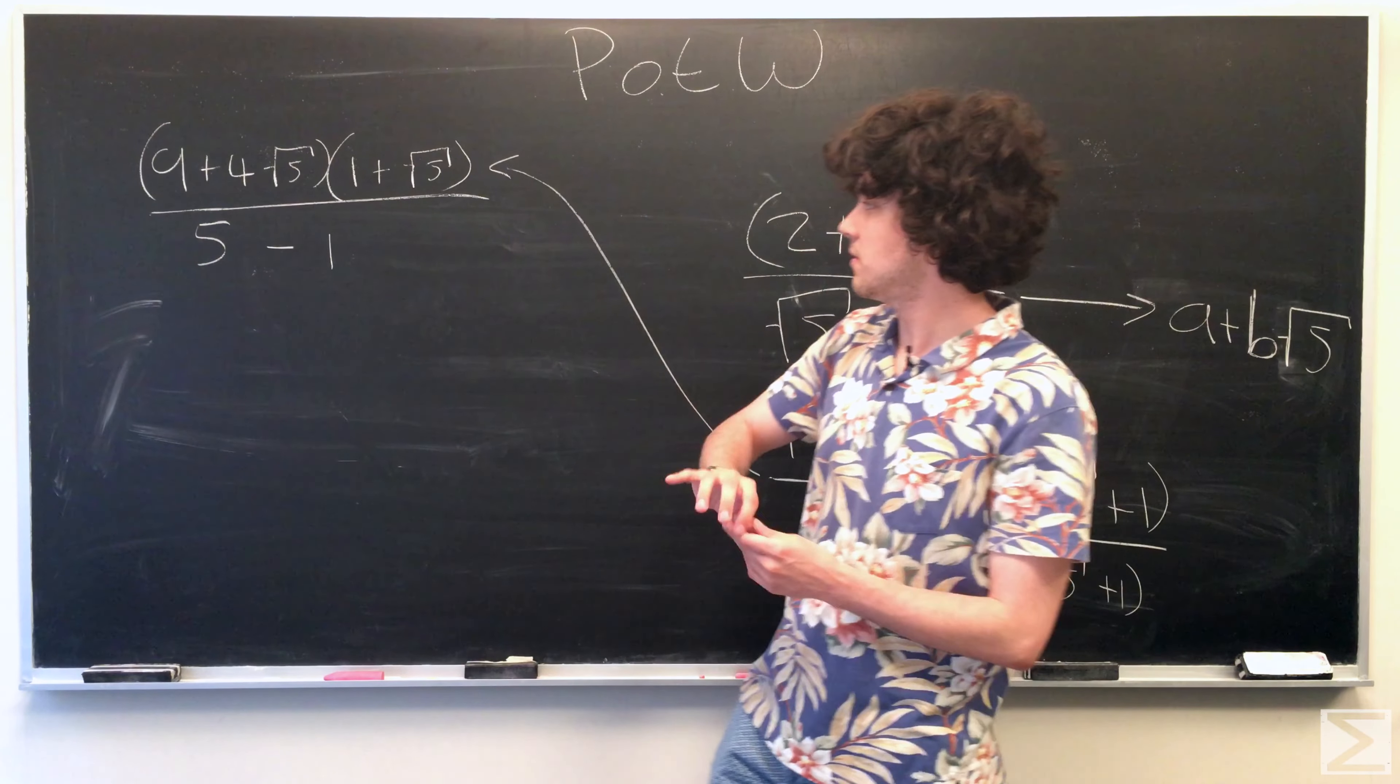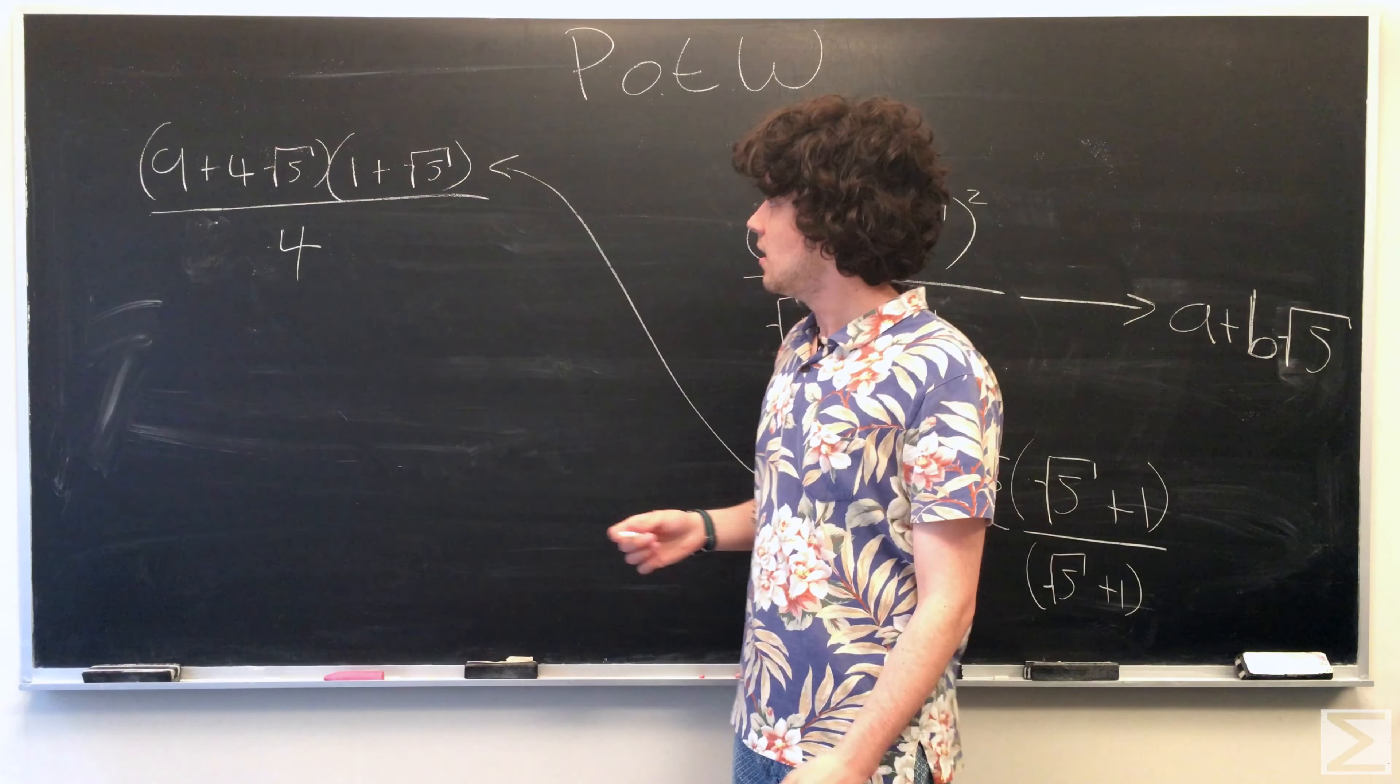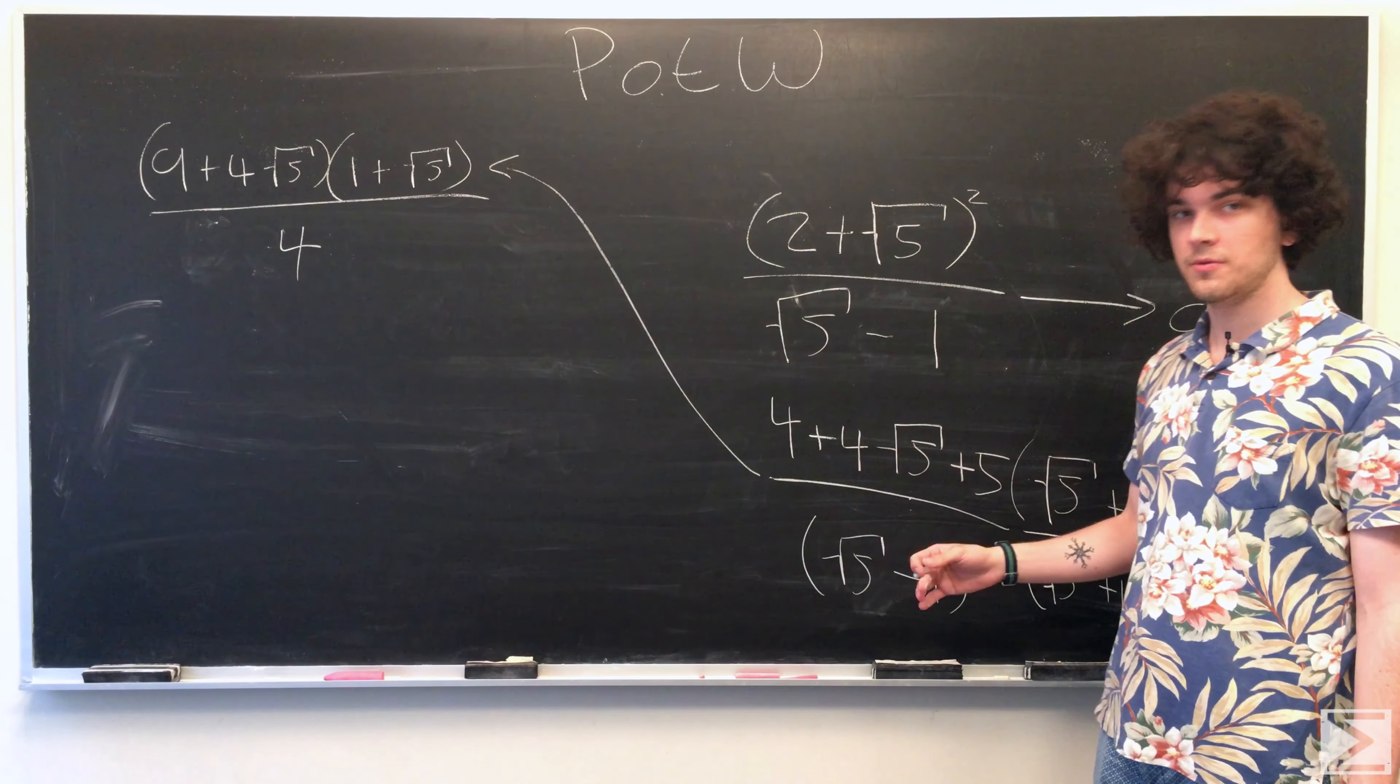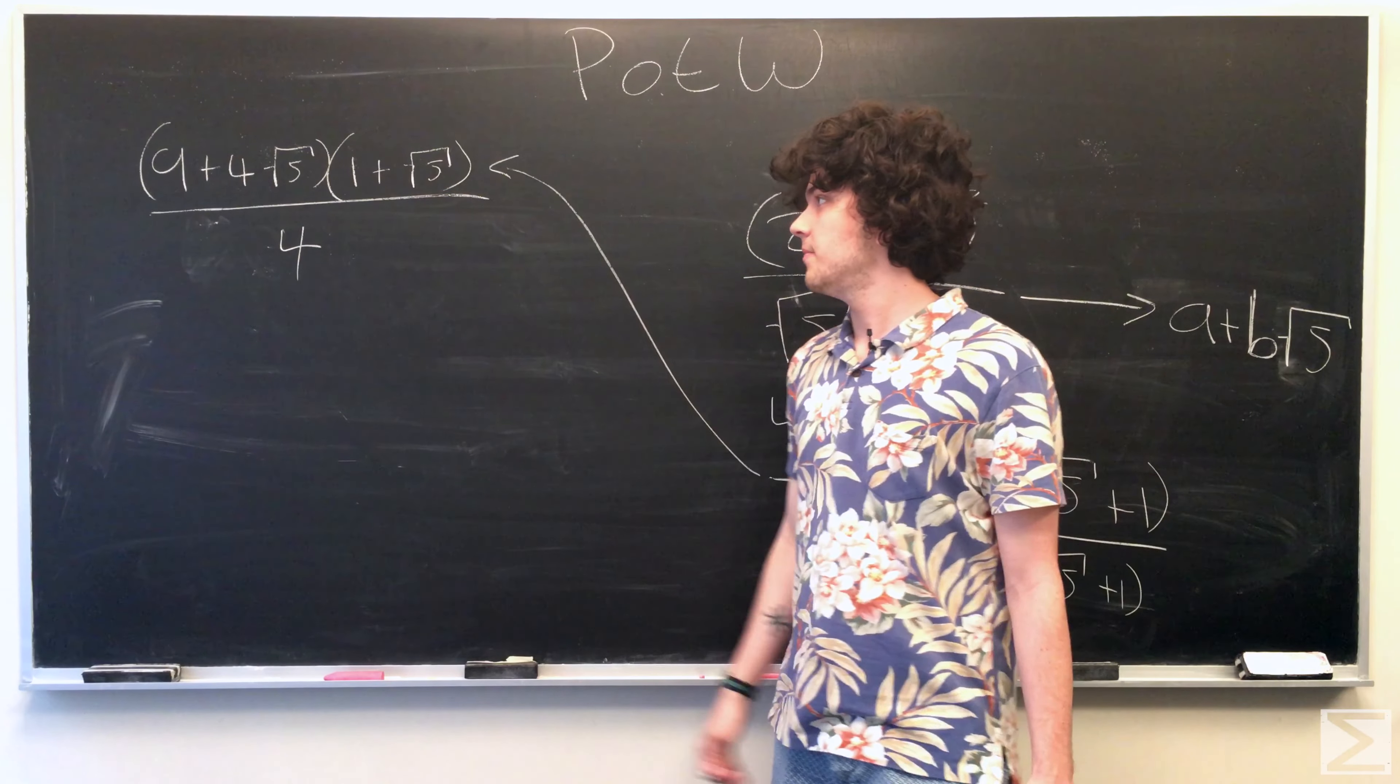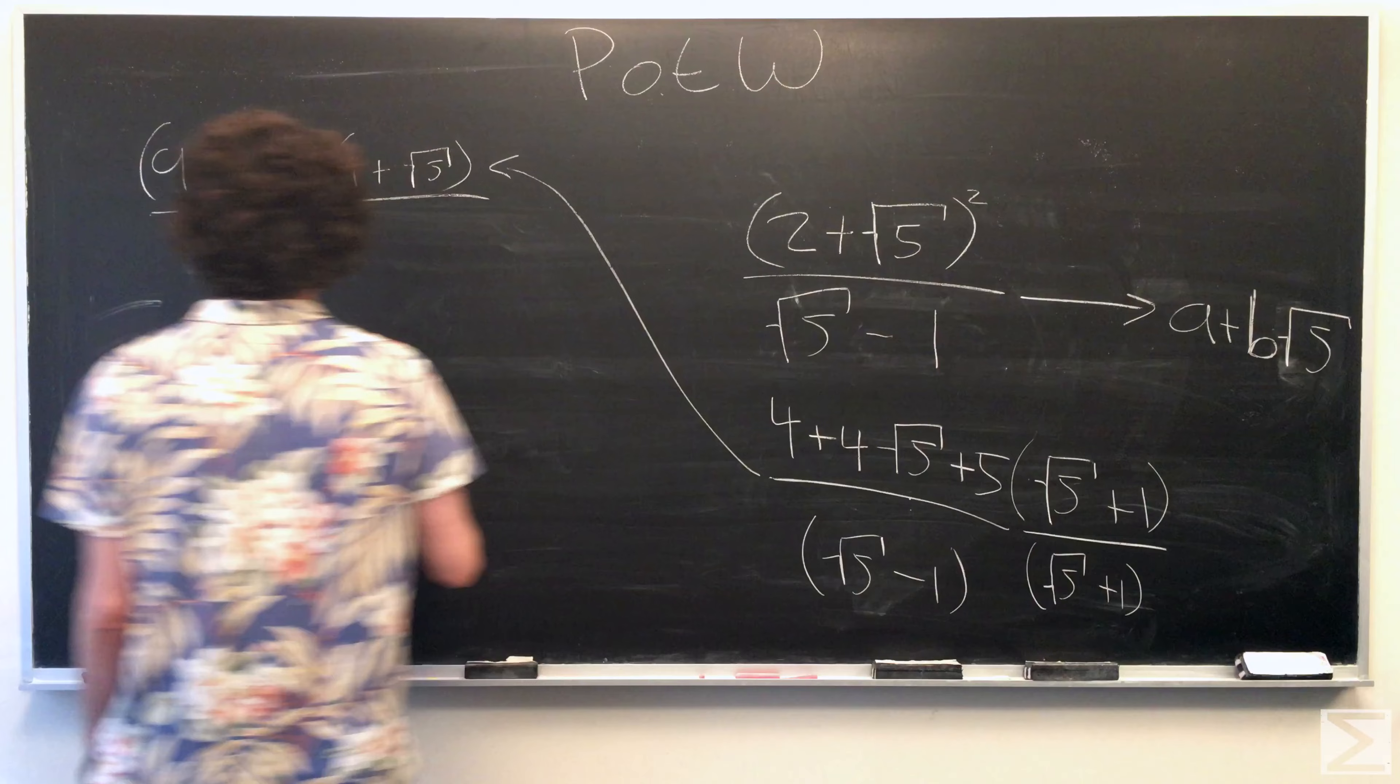So we have this 5 minus 1 on the bottom, which we can make that 4. And since we have two terms that don't have a root 5, just ordinary old natural numbers, we add those together to get 9. 4 plus 5 equals 9. And then we can also foil this out and see what we have.